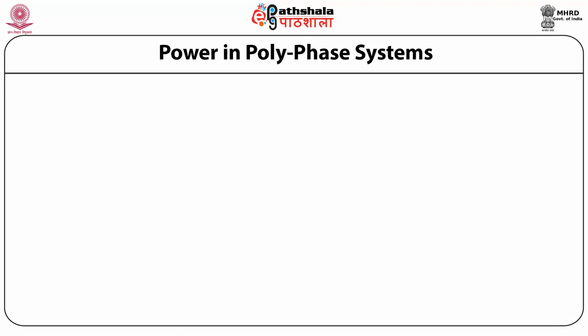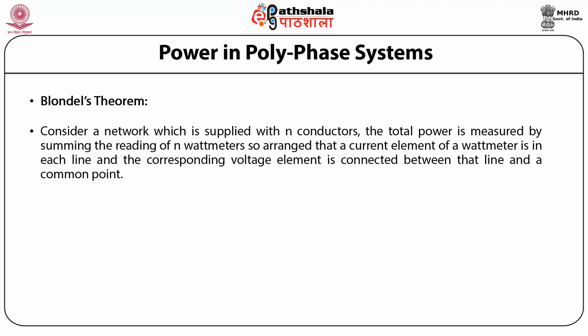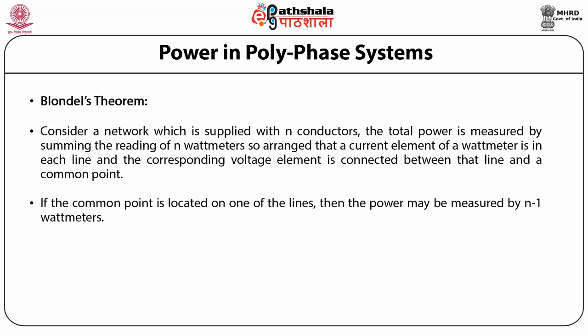Let us study the power in polyphase systems. First, we need to understand Blondel's Theorem. Consider a network supplied with N conductors. The total power is measured by summing the readings of N wattmeters, arranged so that a current element is in each line and the corresponding voltage element is connected between that line and a common point. If the common point is located on one of the lines, then the power may be measured by N−1 wattmeters.